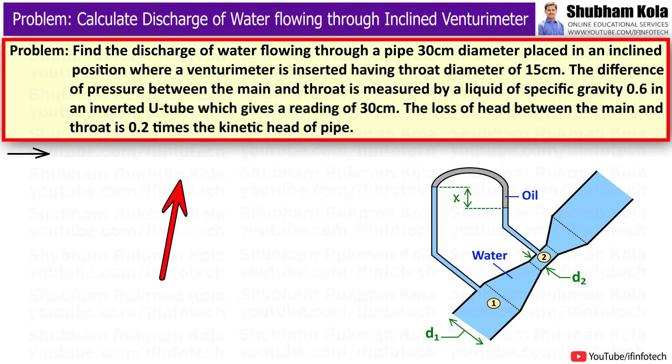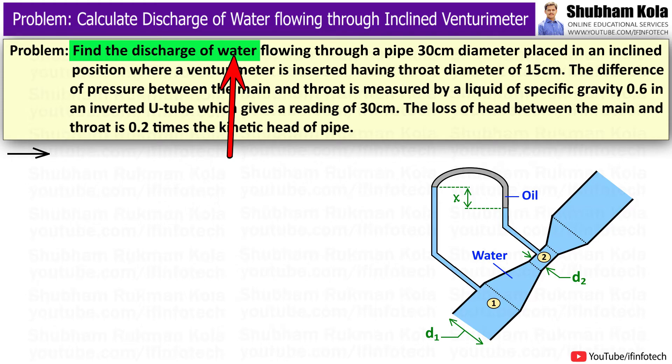The problem statement is: find the discharge of water flowing through a pipe 30 cm diameter placed in an inclined position, where a venturimeter is inserted having a throat diameter of 15 cm.